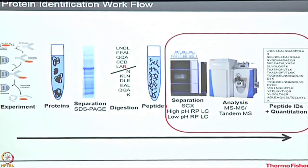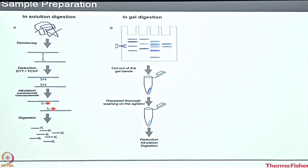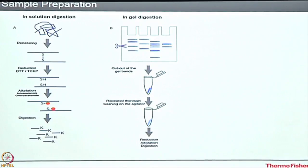Today we will discuss mostly the mass spectrometry part — how you can analyze the data and how you can introduce the peptides into the mass spectrometer. First, a brief on sample preparation. You have the IP proteins; either you run an SDS-PAGE for in-gel digestion, or you do in-solution digestion. For in-gel digestion, you run the gel, cut the band of interest, then digest that band with trypsin. The protein gets digested to peptides, which come out from the gel band and are extracted for further processing.